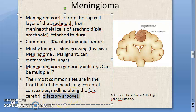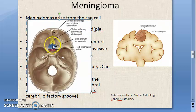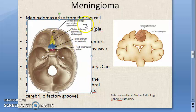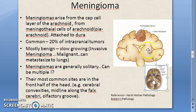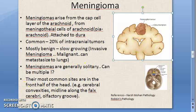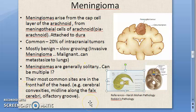Another common site is the olfactory groove, which is also in the front part of the head, near the olfactory nerve. The olfactory groove is highlighted here in yellow. So in all these areas - olfactory groove, falx cerebri - you can find meningioma more commonly.